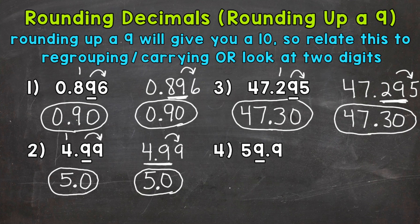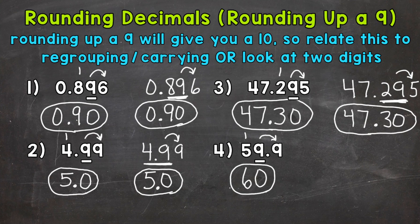Lastly, number 4, we have 59 and 9 tenths. We're going to round to the 1's place, also known as rounding to the nearest whole number. The digit in the 1's place is underlined — we have a 9. Look to the right and we have a 9, so we know we are going to round up. If we round up a 9, we get 10. So put the 0 in the 1's place and then regroup or carry the 1. Now we have 1 plus 5, which gives us 6. So rounding to the 1's place gives us 60.